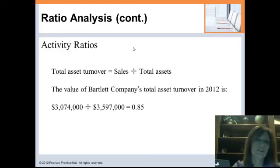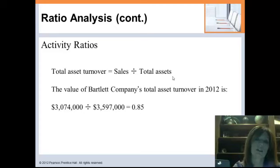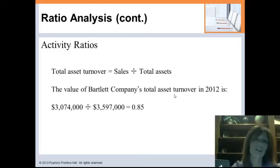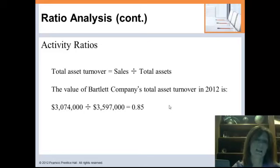Another activity ratio is total asset turnover, where we take sales divided by total assets. This tells us how our assets are generating sales dollars. For Bartlett, the answer is 0.85, meaning they're converting asset dollars into sales dollars — specifically $3 million in sales out of almost $6 million in assets. Whether that's good depends on the industry comparison.